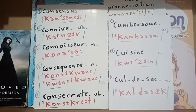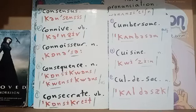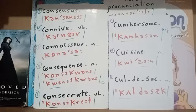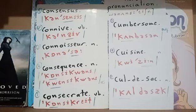Connoisseur, as a noun, means someone or a person who knows a lot about a particular subject. The fourth word is pronounced in two ways. The British pronunciation is consequence. The American pronunciation is consequence — also a three-syllable word, but stress is on the first syllable. Consequence means 'the result.'